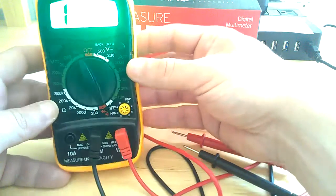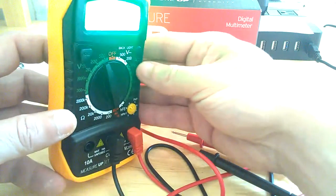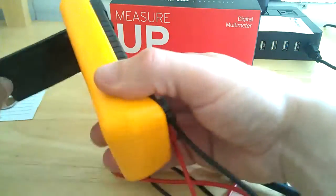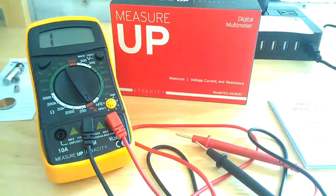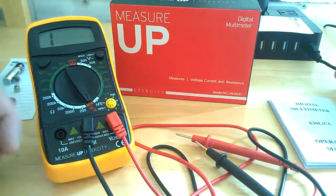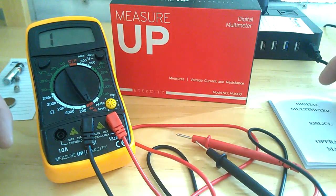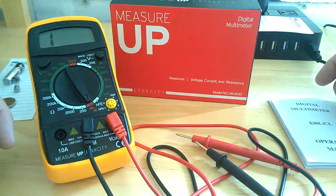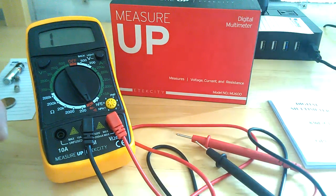Very nice display. And like I said, it does have the backlit display on. It's kind of hard to show you on the screen. On the video, it glares a little bit. But it's very nice and clear. Very nice meter. It's the MeasureUp E-Tech City, model number MU600. Digital multimeter. It does voltage current and resistance. And thank you for watching. Don't forget to like, share, and subscribe.